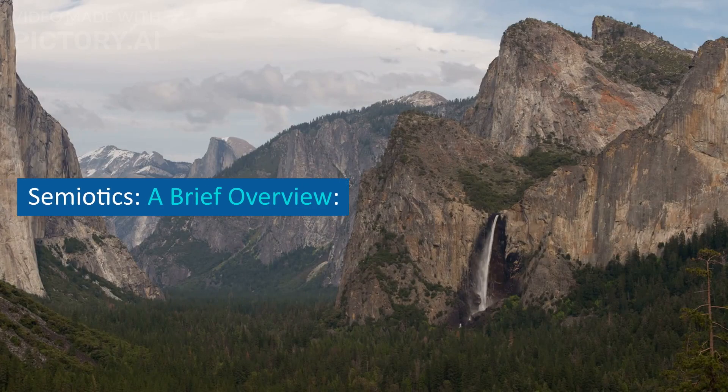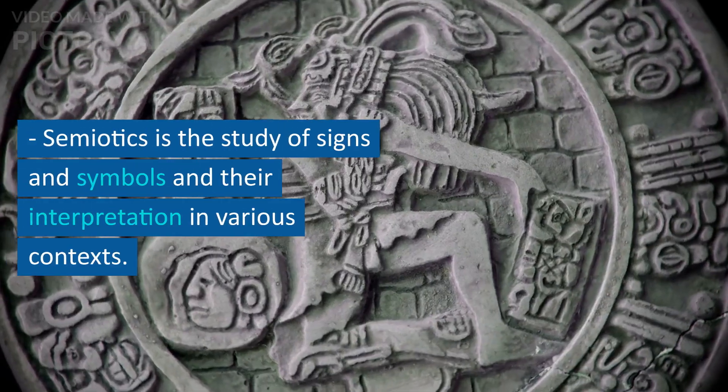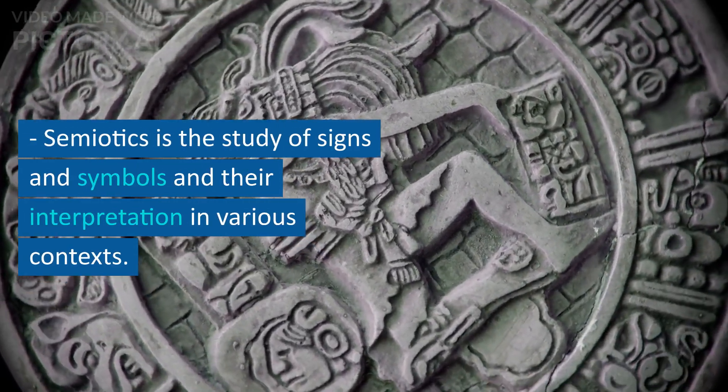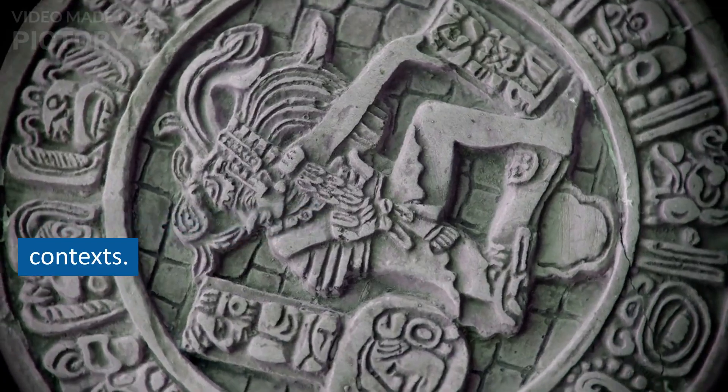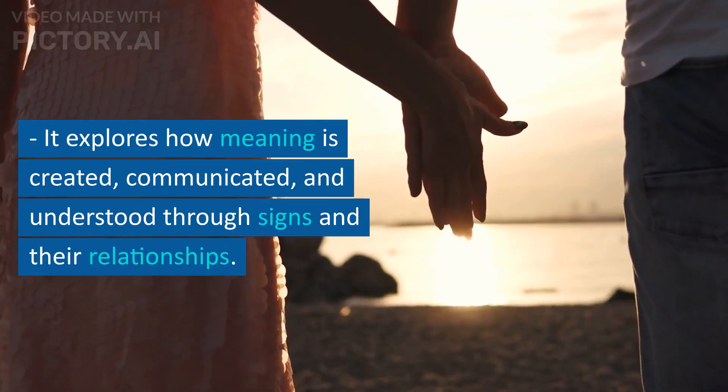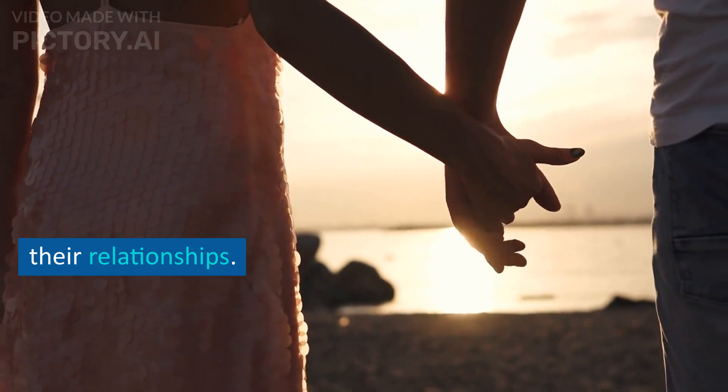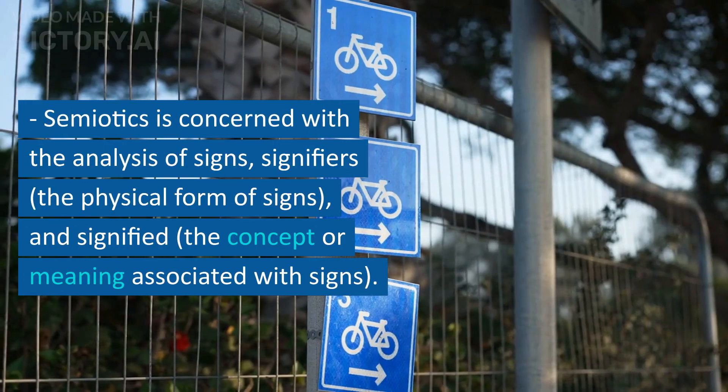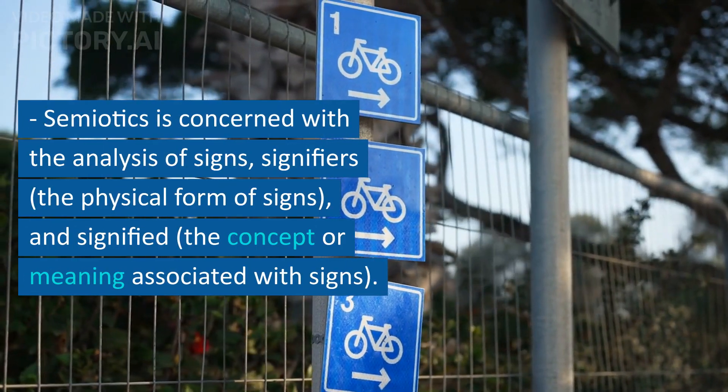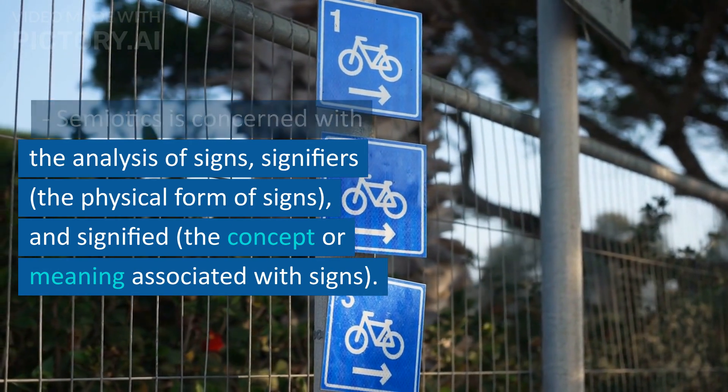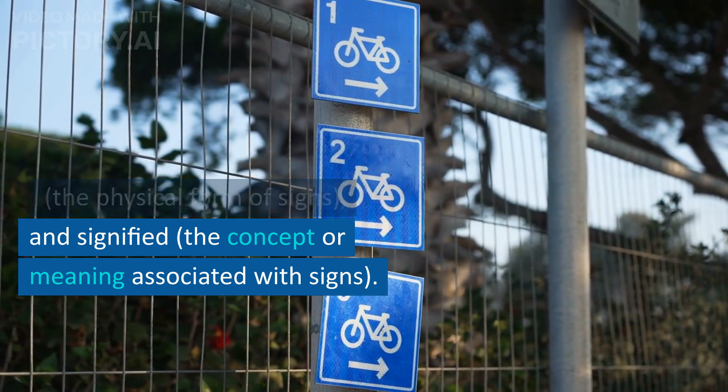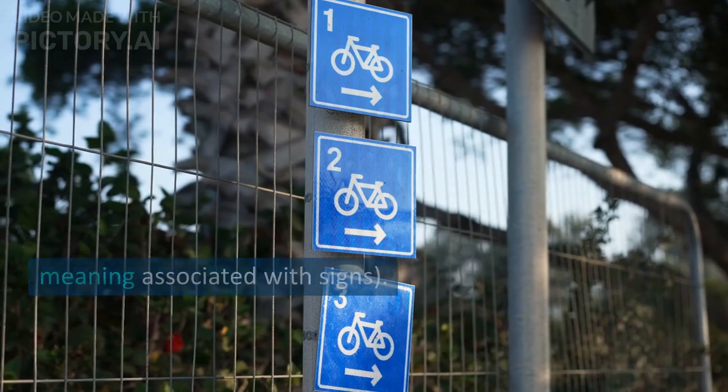Semiotics: A Brief Overview. Semiotics is the study of signs and symbols and their interpretation in various contexts. It explores how meaning is created, communicated, and understood through signs and their relationships. Semiotics is concerned with the analysis of signs, signifiers (the physical form of signs), and signified (the concept or meaning associated with signs).